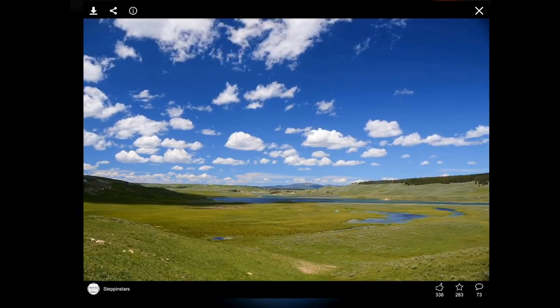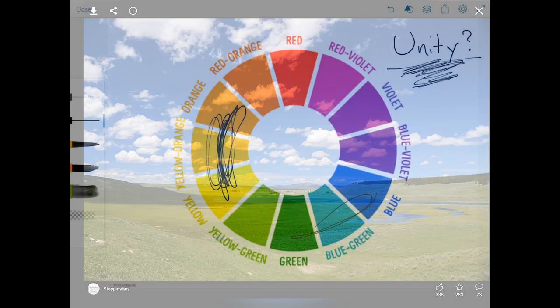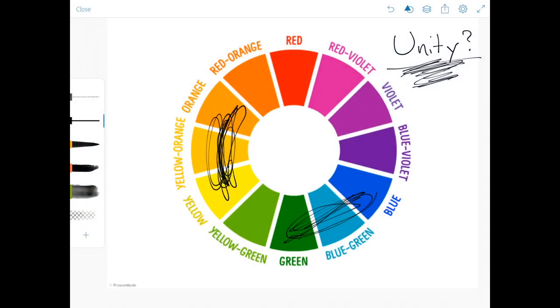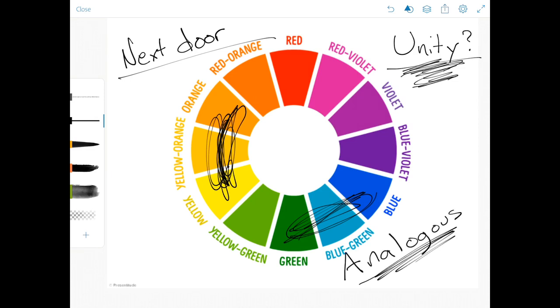Here's another example using harmonious colors of blue and green. Colors that are next door on the color wheel have a fancy name. They are called analogous.